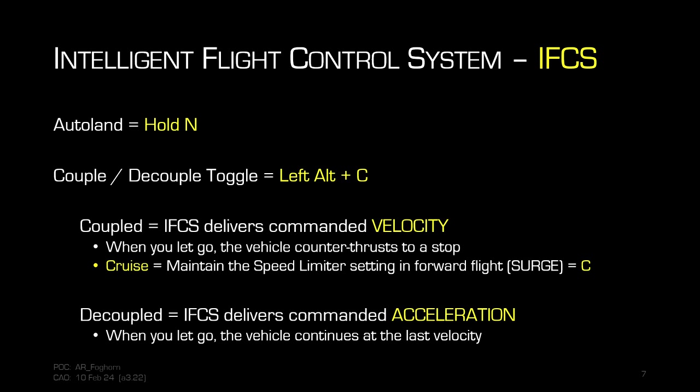In Star Citizen, our spacecraft use the Intelligent Flight Control System, or IFCS, which provides many different automated functions. Some of the default key binds are on screen: N brings your gear up and down, and long-holding N triggers auto land once you are within a reasonable position over a landable surface such as a landing pad or hangar. You can couple and decouple with Left Alt and C — a change from what a lot of people are used to, changed a couple patches ago from just C to Left Alt and C.